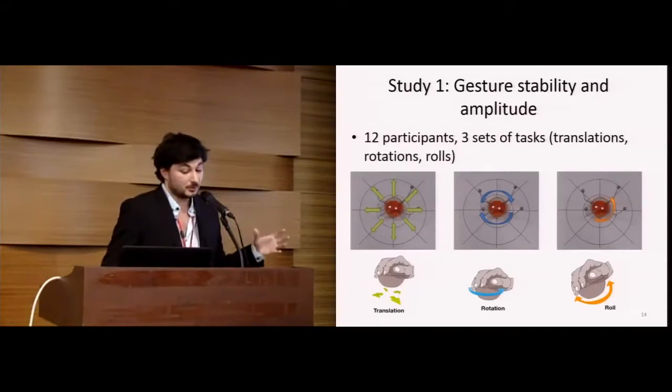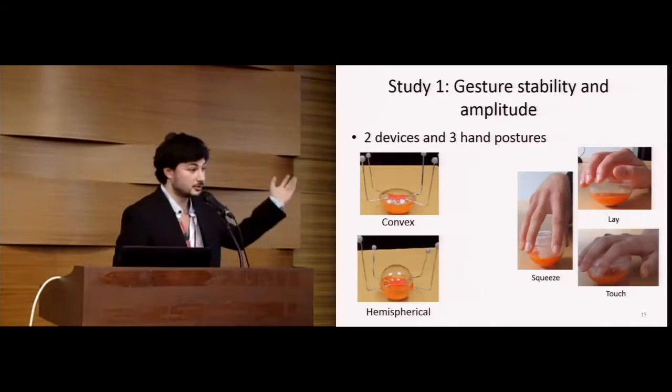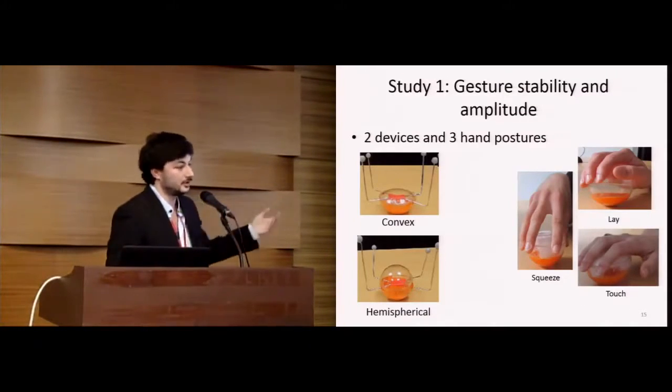In the first experiment, there were 12 participants, all right-handed, and they had to perform three sets of tasks: eight translations, eight rolls, and two rotations. In this experiment, we used the two devices and three hand postures we defined in the pre-study.